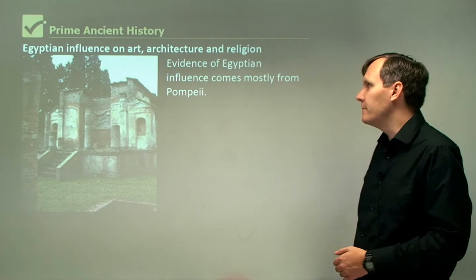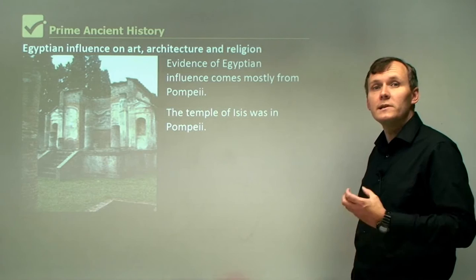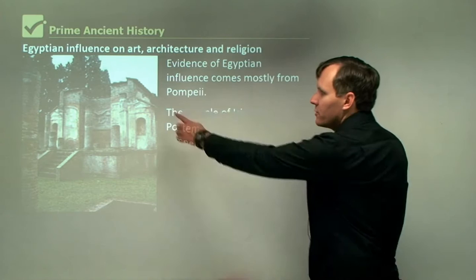The evidence of Egyptian influence mostly comes from Pompeii. The Temple of Isis was in Pompeii, and Isis of course was an Egyptian female goddess. This is a picture of the temple of Isis — these are the ruins that are still in Pompeii today.